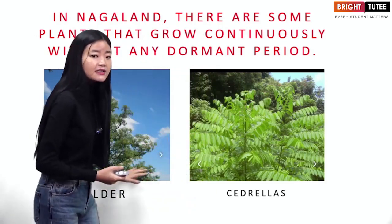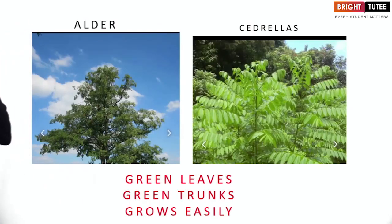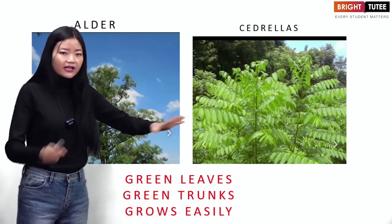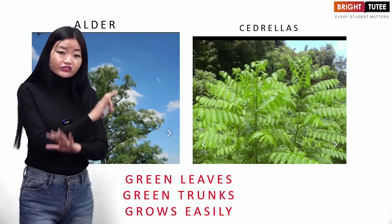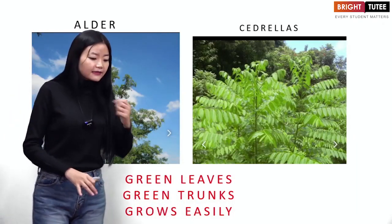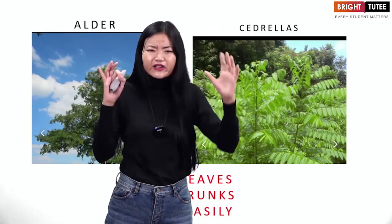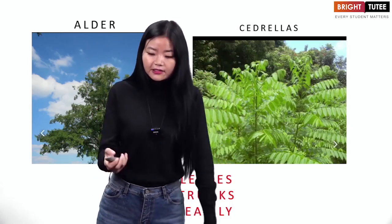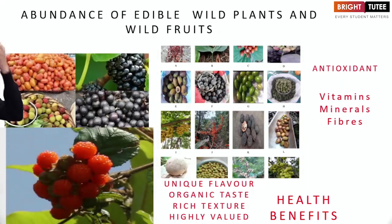The alder tree has purely green leaves and green trunks, which is really good for vegetation. Both the alder tree and the citrus tree grow very fast and very easily — it is a blessing to the state of Nagaland to have these two plants.